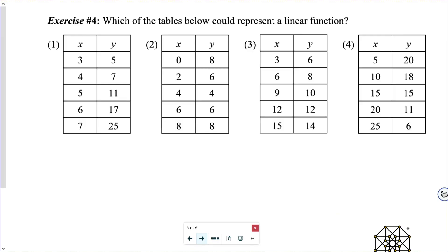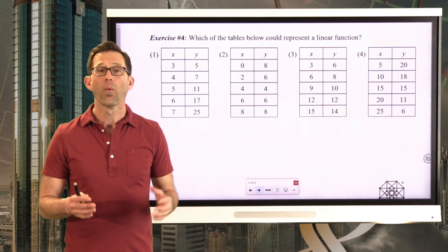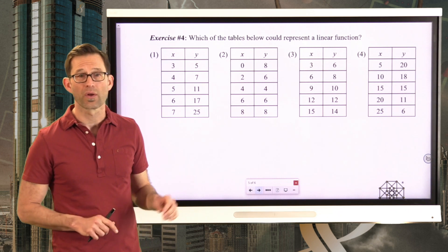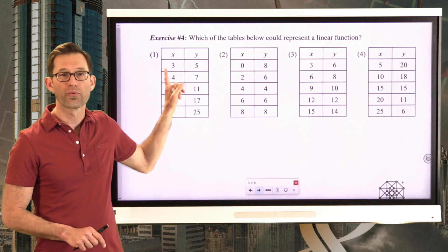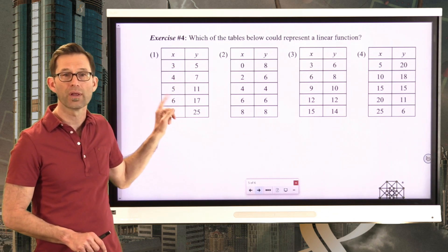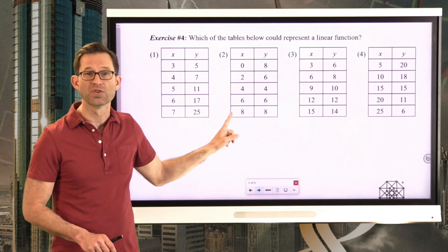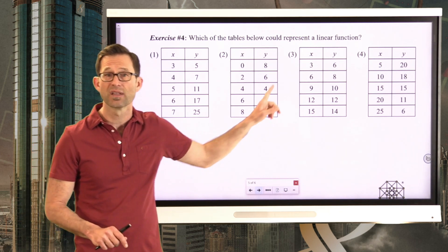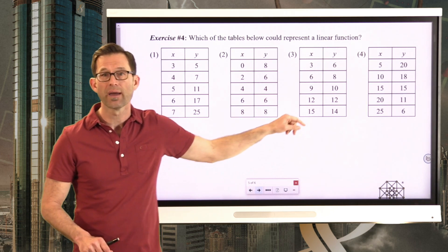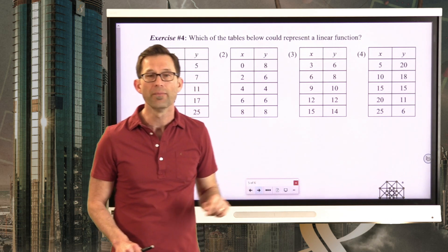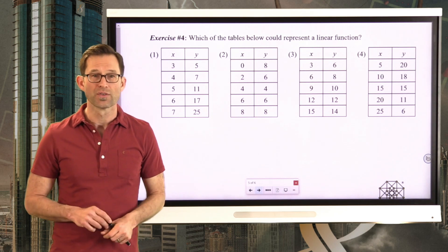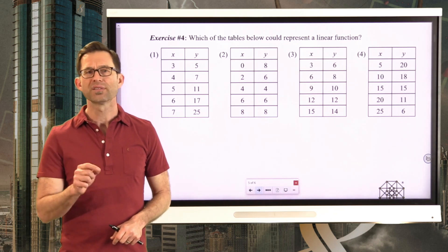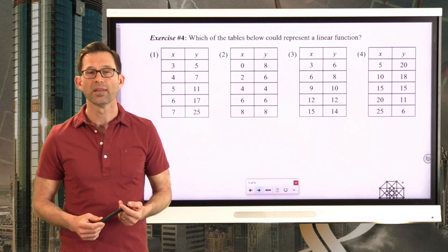Let's test this out in exercise number four: which of the tables below could represent a linear function? What I want to point out is that the change in x remains the same in each table. The first table has x changing by one unit, the second by two units, the third by three units, and the fourth by five units — that's fine as long as the change in x is constant. Now look at all the changes in y and determine which table could be linear.